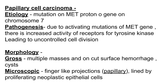In papillary cell carcinoma, the mutation occurs in the MET proto-oncogene present on chromosome 7, whereas in clear cell carcinoma the mutations were in the VHL gene on chromosome 3. Due to activating mutations in the MET gene, there is increased activity of tyrosine kinase, which causes uncontrolled cell proliferation.